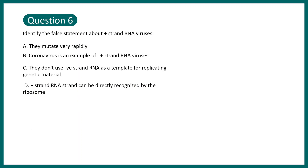Question 6: Identify the false statement about plus-strand RNA viruses. Options: they mutate very rapidly; coronavirus is an example of a plus-strand RNA virus; they don't use negative-strand RNA as a template for replicating genetic material; or plus-strand RNA can be directly recognized by the ribosome. We have to identify the false statement — the false statement is option C. For more detail, the entire playlist is available via the i button.